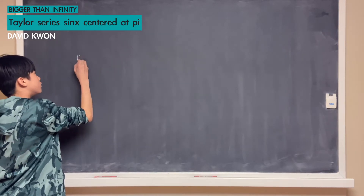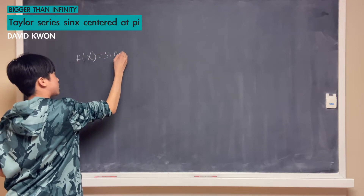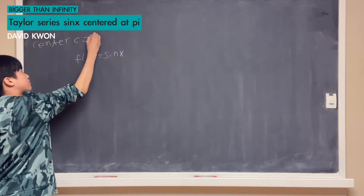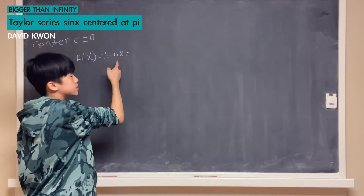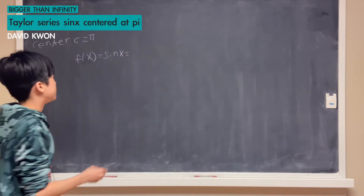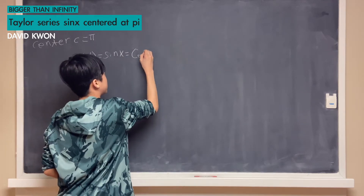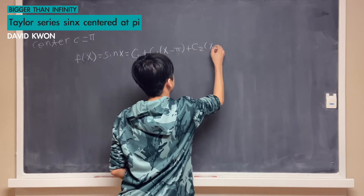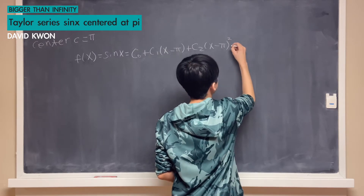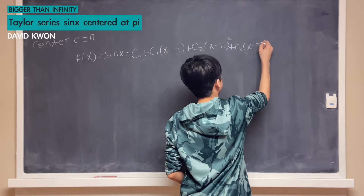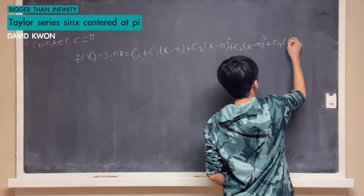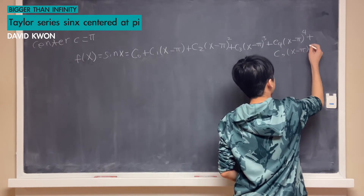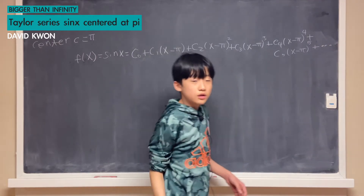We have our function sin x, but before that we need to set up our center c. The center c is π. We will set sin x equal to a polynomial equation having center c, which looks like: c₀ plus c₁ times (x minus π) plus c₂ times (x minus π)² plus c₃ times (x minus π)³ plus c₅ times (x minus π)⁵ plus dot dot dot, meaning it goes on forever.